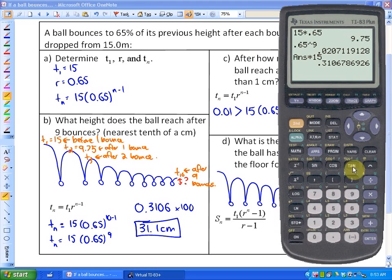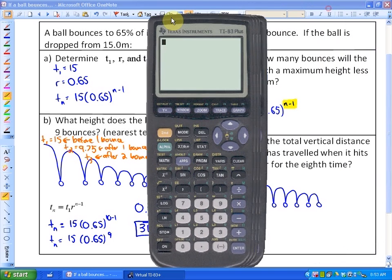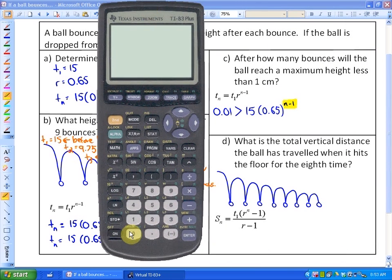So if I go ahead and just start guessing for exponents, let's say I guess that it's going to be after, well, for an exponent of 15, which would be actually after 15 bounces. So I'll do 15 times 0.65 to the power of 15.